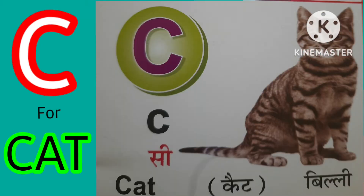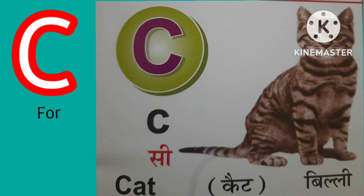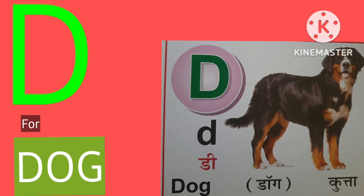C for cat. Cat means billy. D for dog. Dog means kutta.